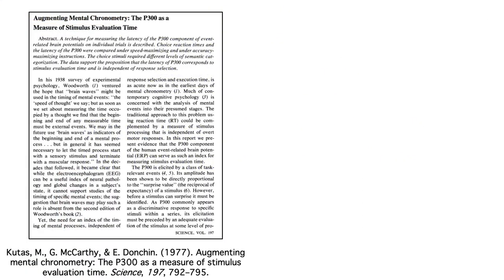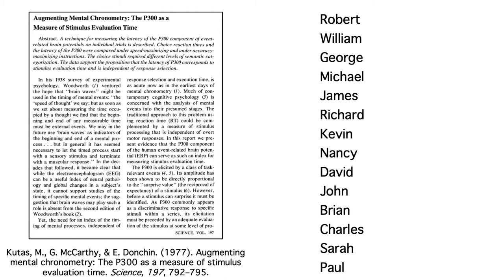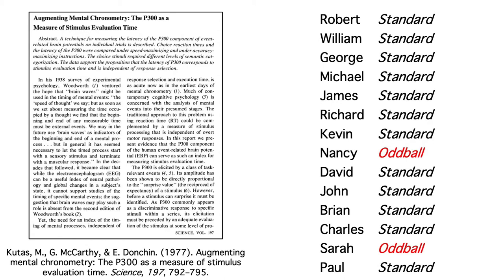To explain P3 latency, I want to talk about this very old oddball study by Marta Koudis, Greg McCarthy, and Manny Donchin. They presented names on a video display, with one name every two seconds. 80% of the names were typical American male names of the time such as Michael, David, and John. 20% of the names were typical female names, such as Nancy and Sarah.